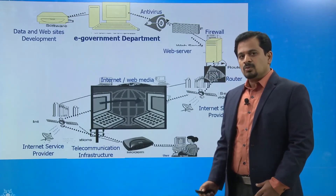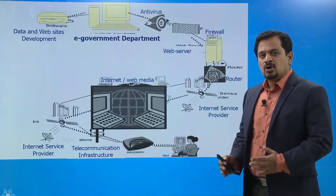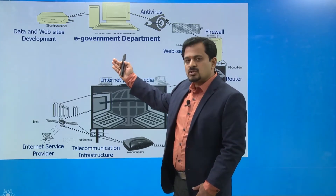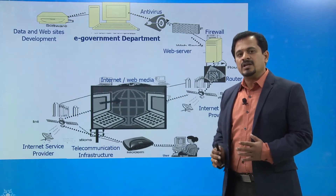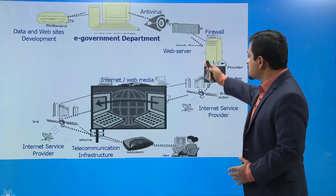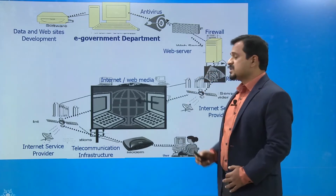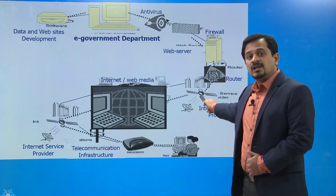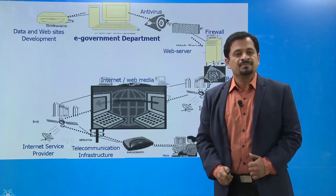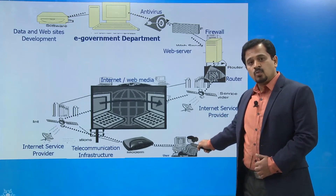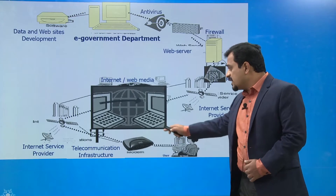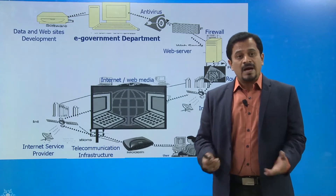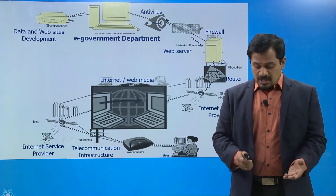To implement e-government, the government has to have data and websites in a very strong manner, and they have to secure the data effectively by means of antivirus, firewall, and web server. The data are then passed through a router and it enters into the internet and web pages and media. Any client wants to access information through the telecommunication infrastructure, and based on that infrastructure they can access all the data and information from the e-government.